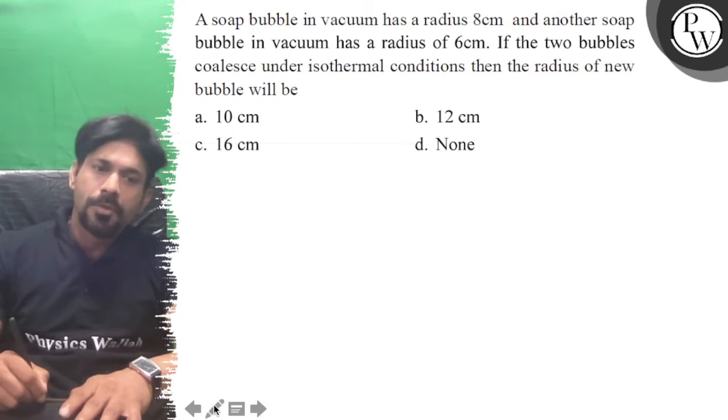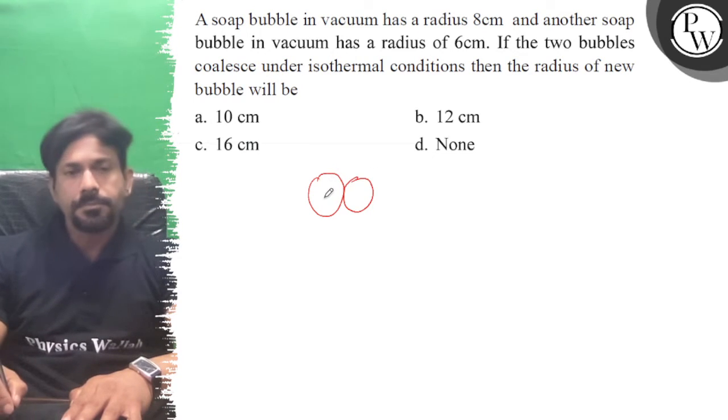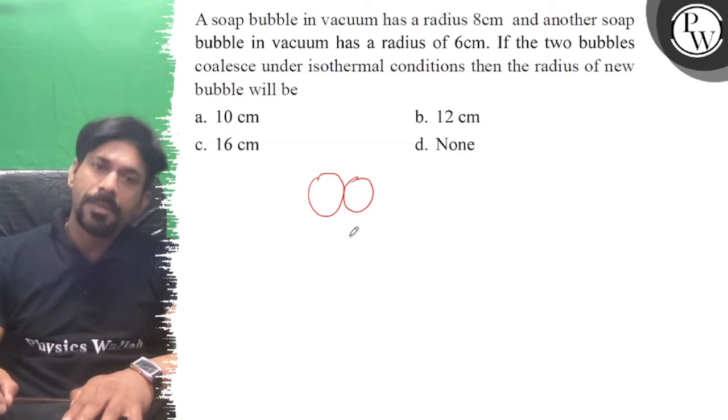So imagine that you have two bubbles and they are collapsing, but they are collapsing under isothermal condition. So we have become a big bubble.